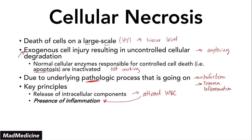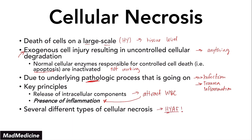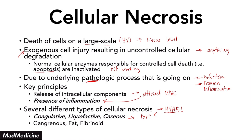When it comes to cell necrosis, we can further distinguish it based on the type that is occurring — and there are several types you need to know. All of these are very high yield. It's easy to quiz you on a type of necrosis by asking what type is most likely occurring given a clinical vignette, or giving you the type and asking you to identify the underlying pathologic condition. We have six main types: in this lecture, part one, we'll cover coagulative necrosis, liquefactive necrosis, and caseous necrosis. In subsequent lectures, we'll cover gangrenous necrosis, fat necrosis, and fibrinoid necrosis.